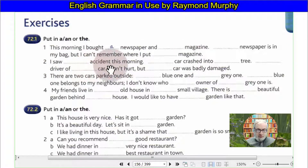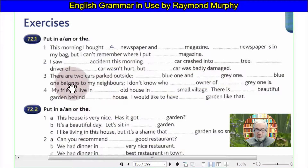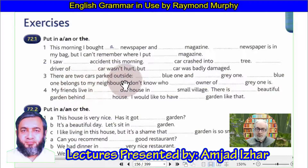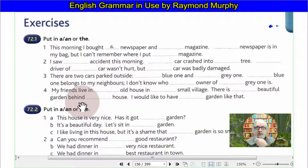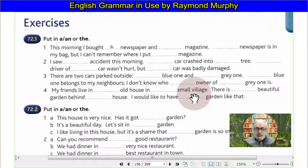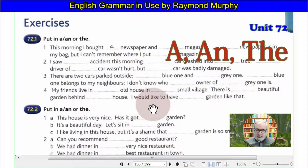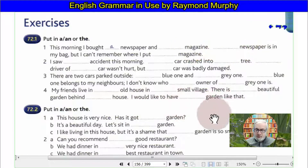I saw something this morning — a car crashed into a tree. The driver of the car wasn't hurt, but the car was badly damaged. There are two cars parked outside — a blue one and a grey one. The blue one belongs to my neighbour. I don't know who the owner of the grey one is. My friend is living in an old house in a small village. There's a beautiful garden behind it. I would like to have a garden like that.